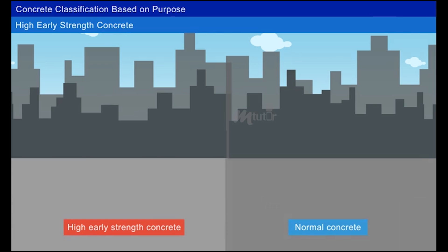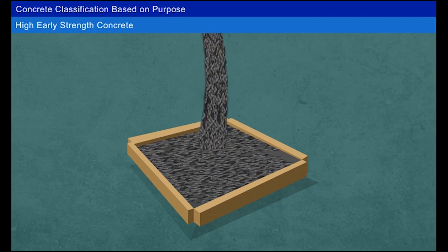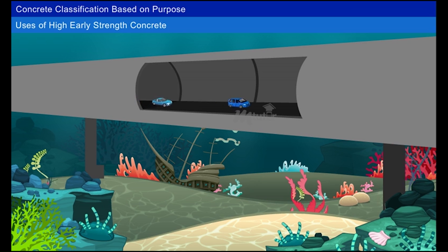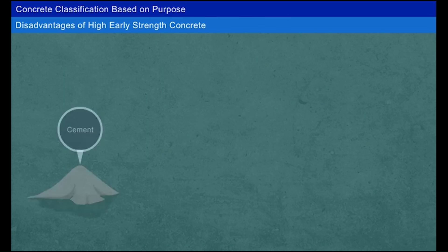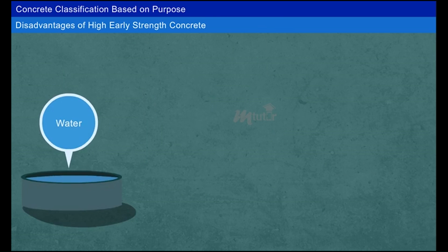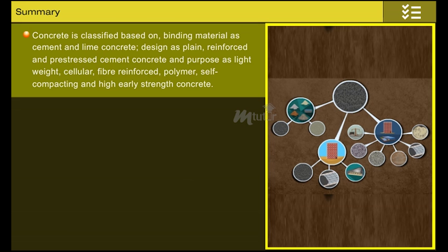High early strength concrete strengthens faster than normal concrete. Since hydration is a time-consuming process, admixtures of accelerators are added to speed up the hydration process and hardening. It is used for constructing underwater structures and in cold weather regions. Advantages: strength increases with minimal time and workability is high. Disadvantages: careful material selection is necessary and the water-cement ratio should be low for rapid curing.